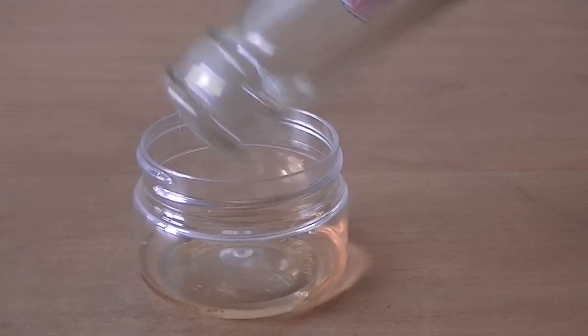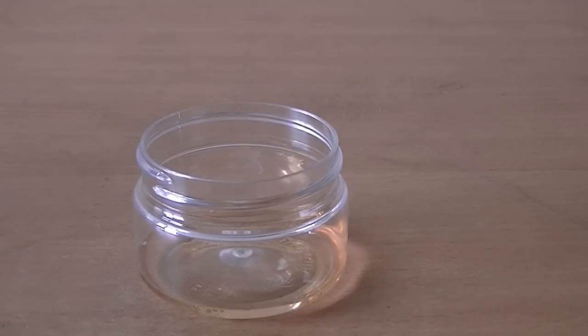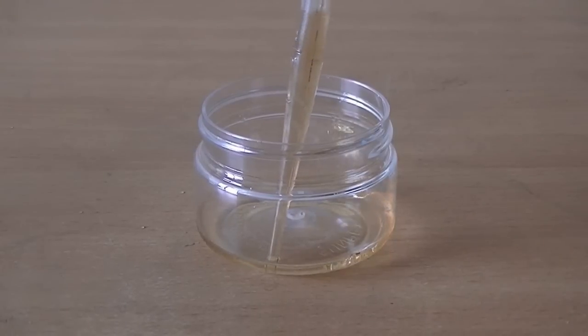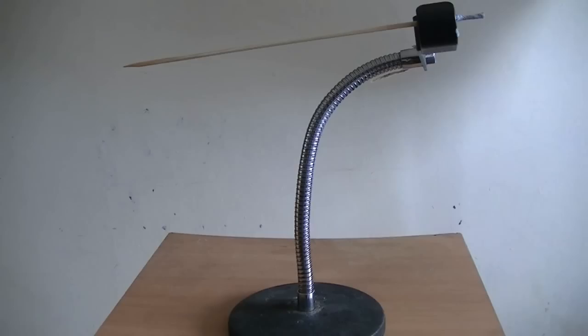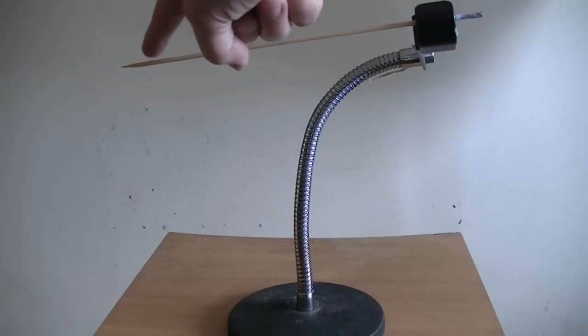Now that we've got the sample, we're going to shine a beam of light through it, so we need a way to suspend a droplet so it's easier to shine the laser through. This cocktail stick attached to this clamp should pretty much do the trick.